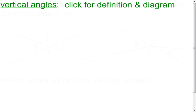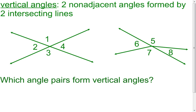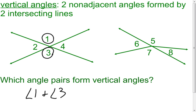Moving on to vertical angles. Basically you're looking for an X shape, and if you have the X, more than likely you're going to get vertical angles — though not always. Vertical angles have to be non-adjacent, so they can't be next to each other, and they're formed by intersecting lines. Looking at angle one and angle three: those two are non-adjacent and formed by two intersecting lines, so angle one and angle three are an example of vertical angles.